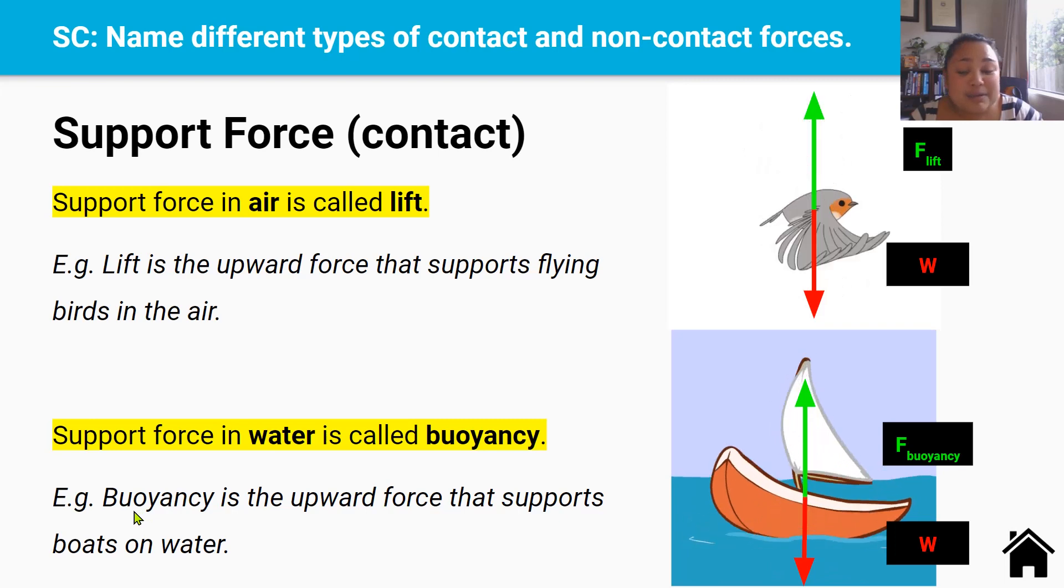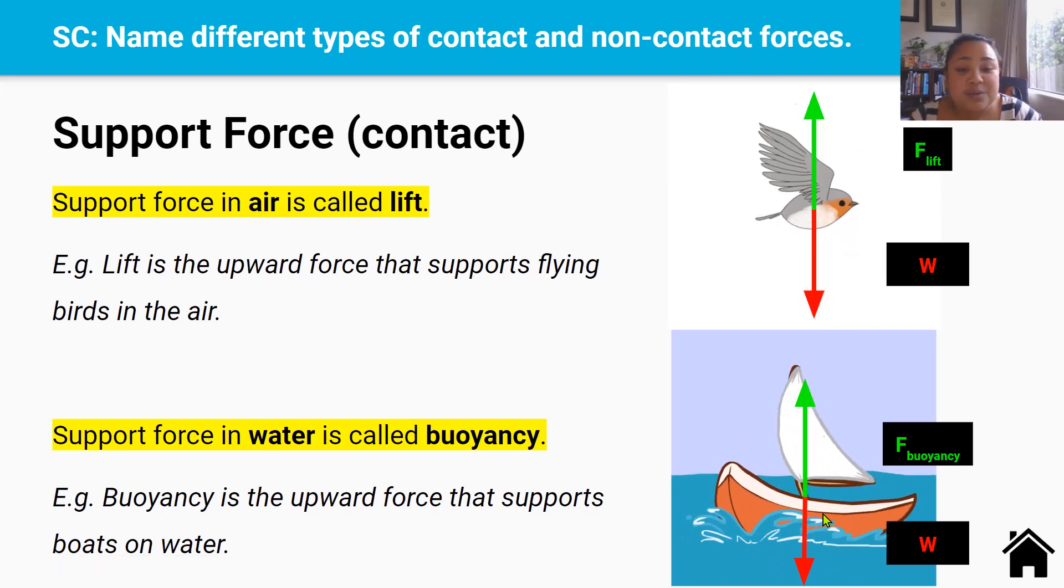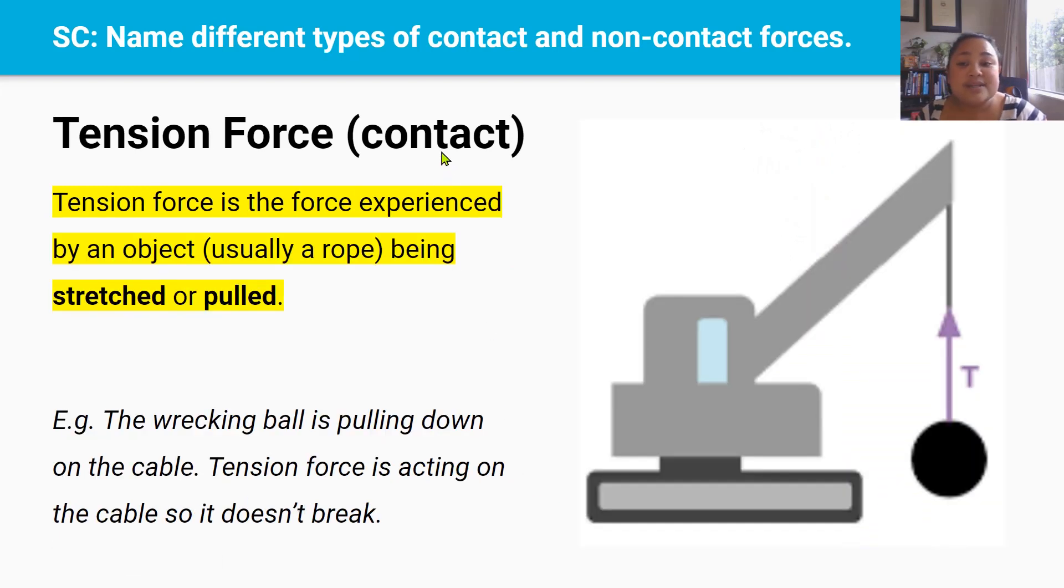Tension force is another contact force. Tension force is the force experienced by an object, which is usually a rope or a cable, being stretched or pulled. And an example of tension force is when this wrecking ball is pulling down on the cable, there's tension force acting on the cable, preventing it from breaking.